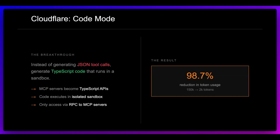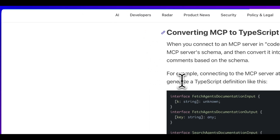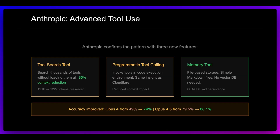Back to the Anthropic blog post — within advanced tool use, there were a few things that all correlate to one another: the tool search tool, programmatic tool calling, and the memory tool. With programmatic tool calling, similar to what Cloudflare discovered, it invokes tools in a code execution environment. In terms of memory, these are file-based, simple markdown files — a similar idea within CloudCode. Boris Cherney mentioned that instead of all the embeddings and vector infrastructure, just have that agentic search. It just feels better and works well. If you've leveraged CloudCode and seen how it reads different files and sections of files, that feels like a much better approach than all the mechanics that go into embedding-type systems.